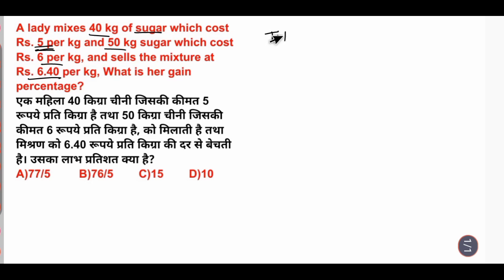Dekhe, sab se pahle total quantity dekhte hain. 40 kg, 50 kg. Total quantity 90 kg. Now total CP.